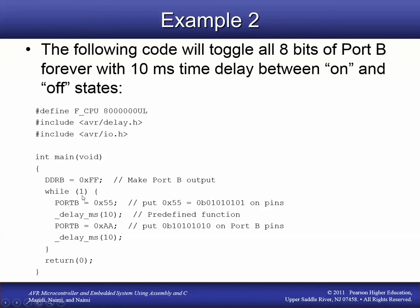Inside the infinite while loop, we set Port B to a value and the program sits there for 10 milliseconds, then moves to the next line. To use the delay function, we include delay.h, and that header needs a value for the processor frequency. We define F_CPU as eight million — that's eight million as an unsigned long — because eight million Hz is the frequency of the built-in oscillator.